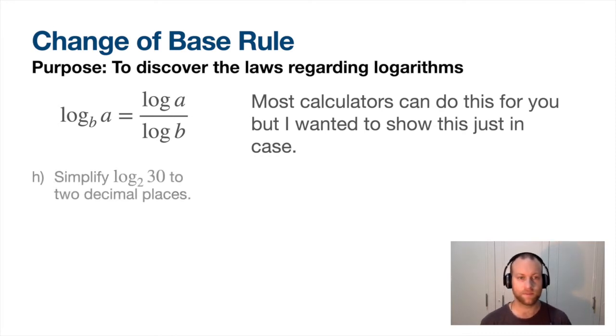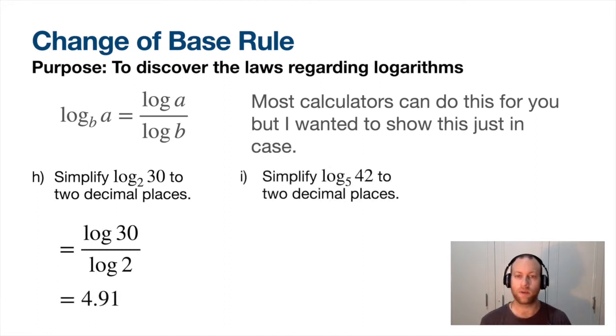So let's try some of these. So simplify log base 2 of 30. Again, if you have a calculator, you can just plug that in. If we did the change of base, it would be this. Not too bad. Try another one. Log base 5 of 42. Plug it into calculator, or log 42 over log 5. We get a number. These are rounded.